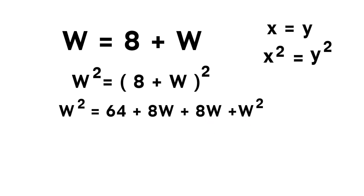Now, here comes the interesting part. If we move the W squared on the right side back to the left side, we subtract it, and we get 0 equals 64 plus 16W. The two W squared terms cancel.